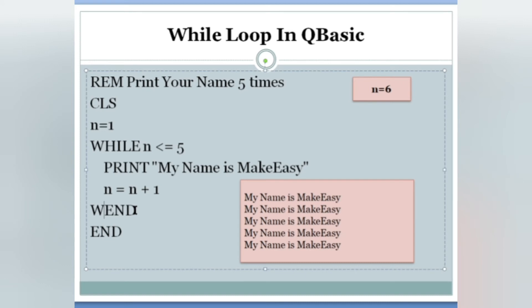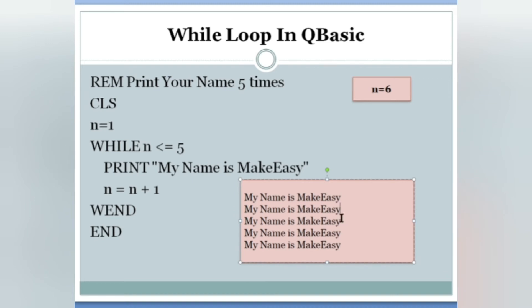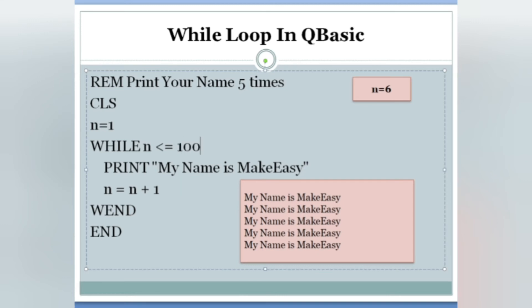Before WEND ends, it goes back to the while loop and checks the condition. Is six less than or equals to five? Condition is false, because six is greater than five. When the condition is false, it goes directly to the line after WEND — end of the program. As you can see in the output screen, it is printed five times. If I keep 15 in the place of 5, it will be printed 15 times; 100 gives 100 times; 1000 gives 1000 times.